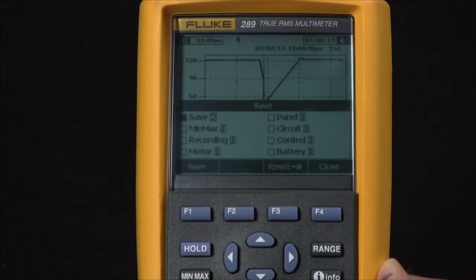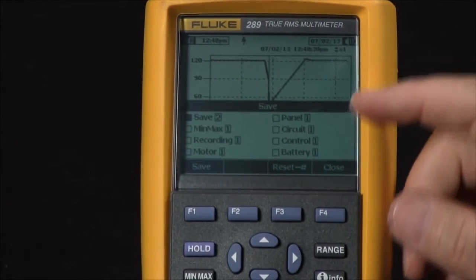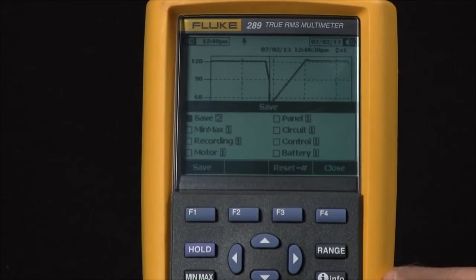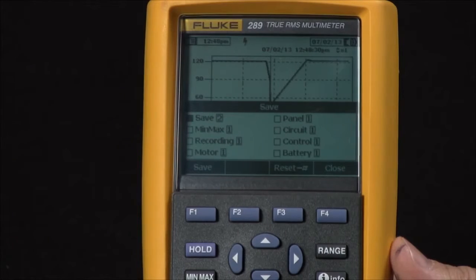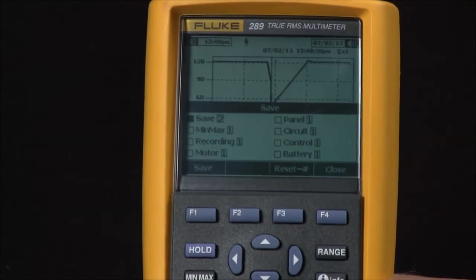There are built-in names, so if you want to name that data, these are eight predefined names that you can use to differentiate it later. Once it's saved, we can simply download this into the FlukeView software.